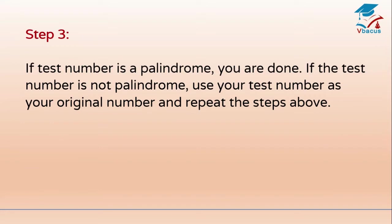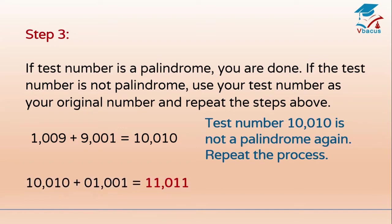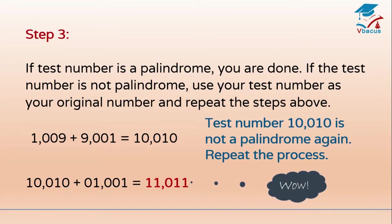Step 3: If the test number is a palindrome, you are done. If the test number is not a palindrome, use your test number as your original number and repeat the steps above. 1009 plus 9001 is equal to 10010. Test number 10010 is not a palindrome again — repeat the process. 10010 plus 01001 is equal to 11,011. Wow! We are done since 11,011 is a palindrome.